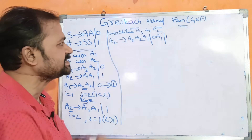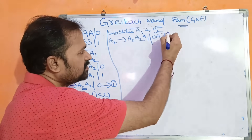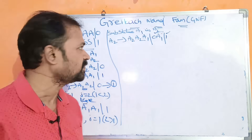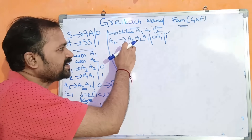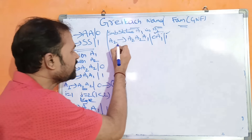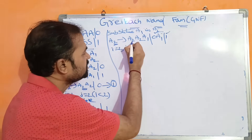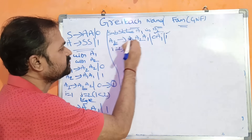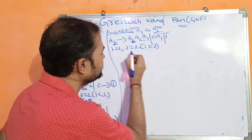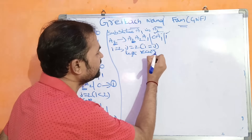Now let us check whether these productions are in GNF form. The productions 0 A1 and 1 are in GNF form, but the production A2 A2 A1 is not, because it does not start with a terminal. Since I equals J equals 2, we have left recursion and must eliminate it.